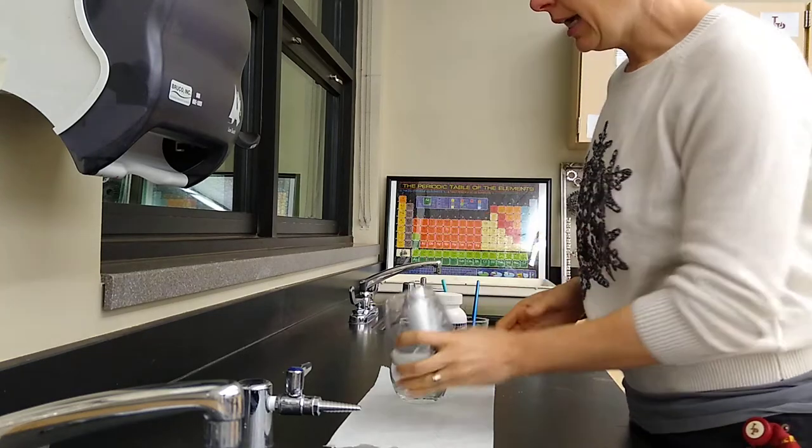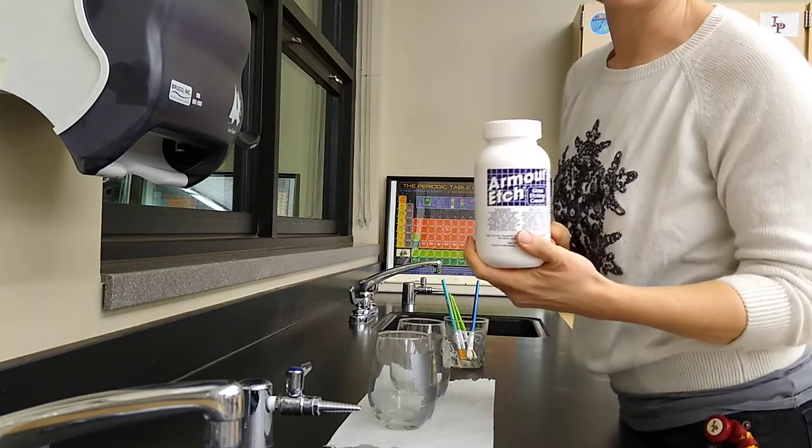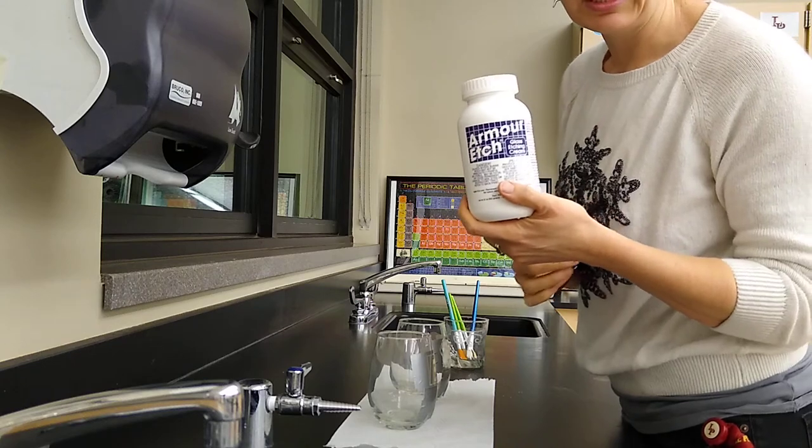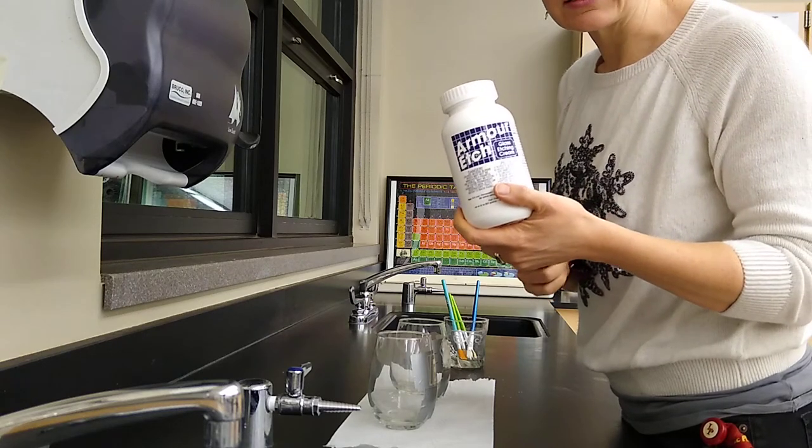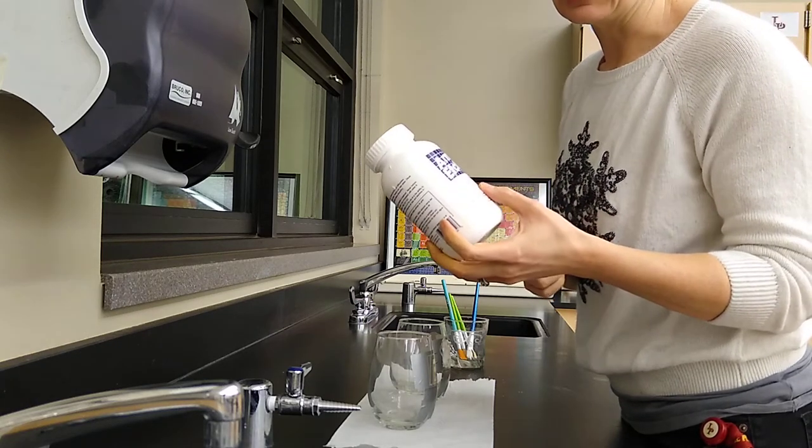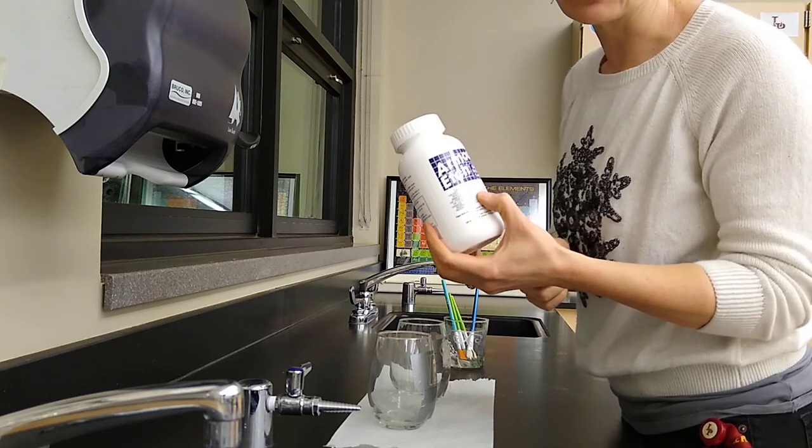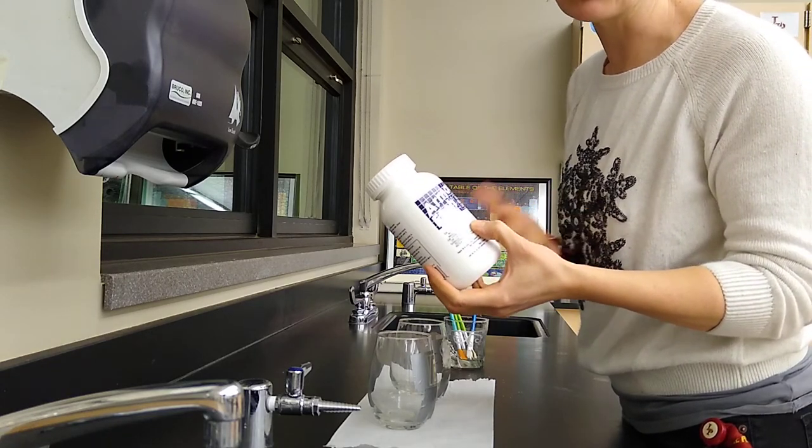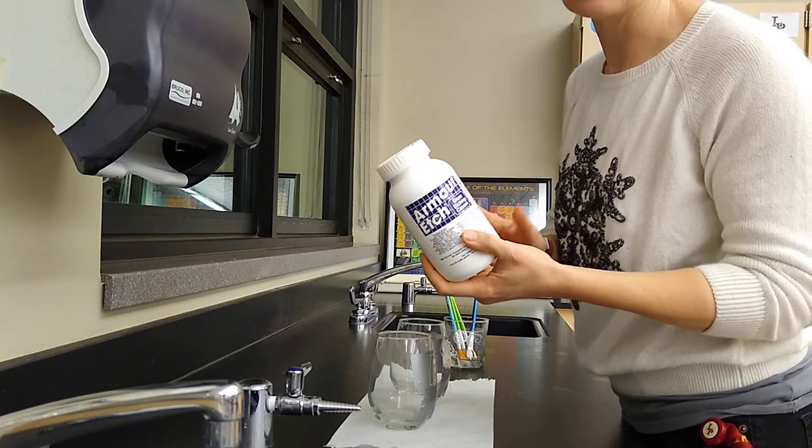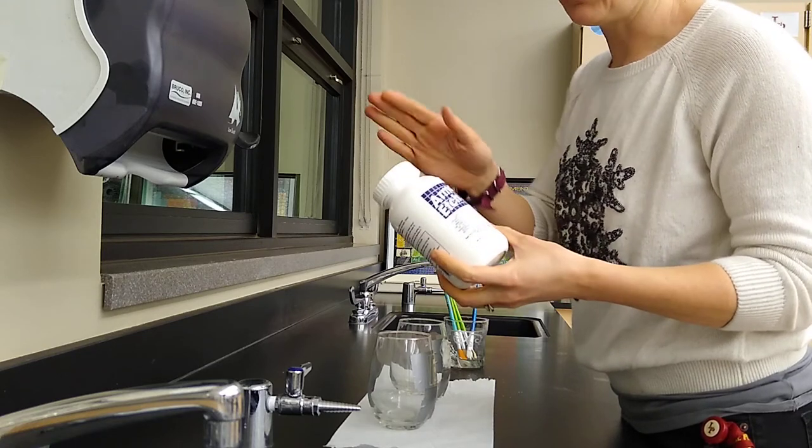You're going to go to the area of the classroom that has this armor etch cream. Now this is hydrofluoric acid, HF, that is totally different from hydrochloric acid, the kind in your stomach. This one will actually eat through glass, which is why it's stored in plastic containers.